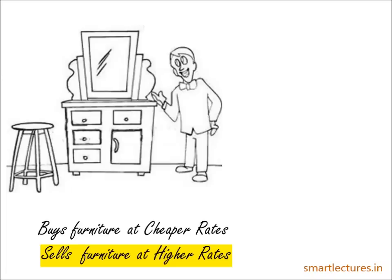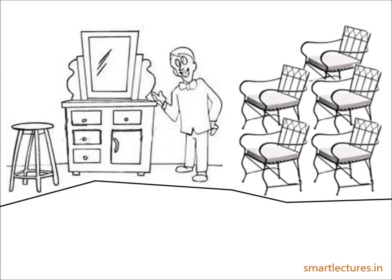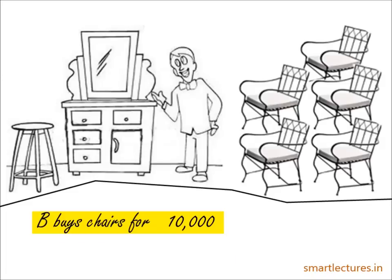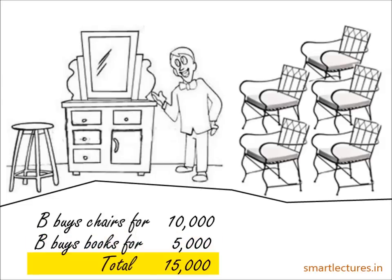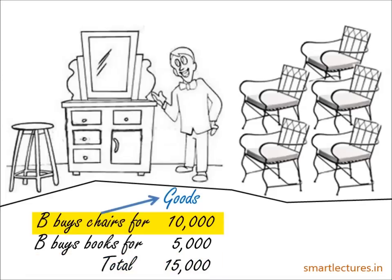He goes to the market and spends Rs 10,000 buying chairs, because he wants to sell the chairs at a higher price. He also spends Rs 5,000 on books for the shop — books that will tell him about the latest designs of furniture, chairs, tables, etc. So he has spent Rs 15,000 in total: chairs of Rs 10,000, which will be called goods, and books of Rs 5,000, which will be called books.